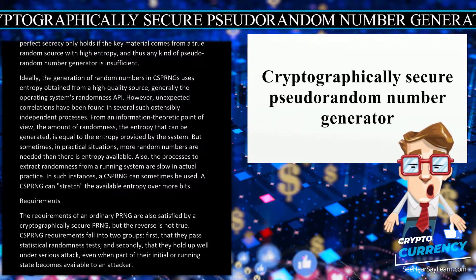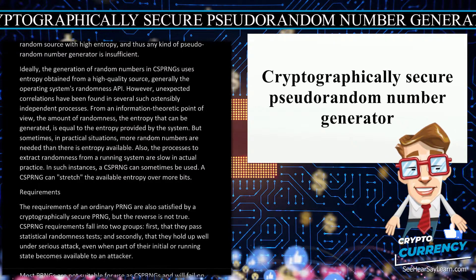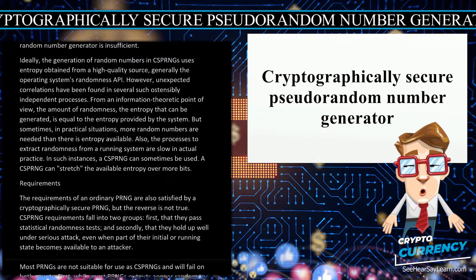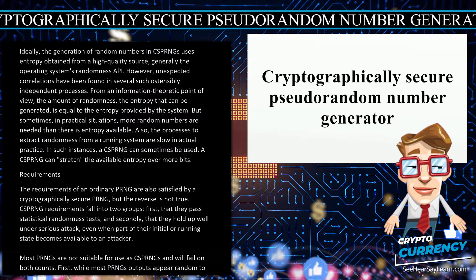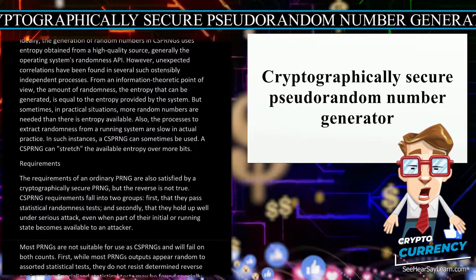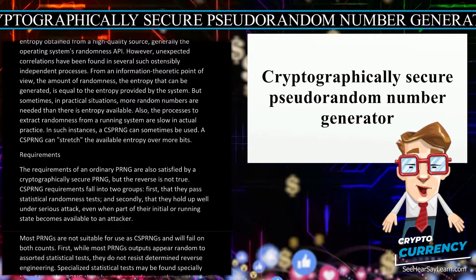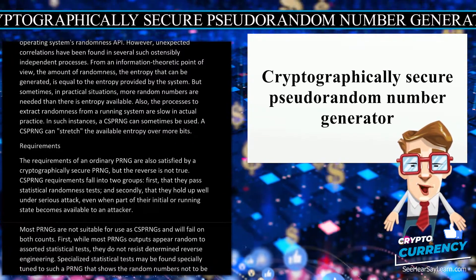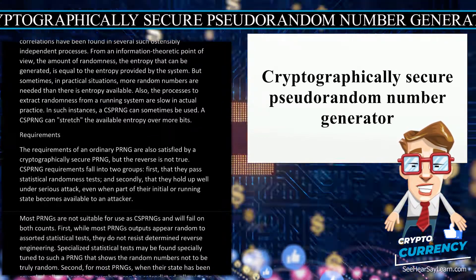The requirements of an ordinary PRNG are also satisfied by a cryptographically secure PRNG, but the reverse is not true. CSPRNG requirements fall into two groups: first, that they pass statistical randomness tests, and secondly, that they hold up well under serious attack, even when part of their initial or running state becomes available to an attacker. Most PRNGs are not suitable for use as CSPRNGs and will fail on both counts.